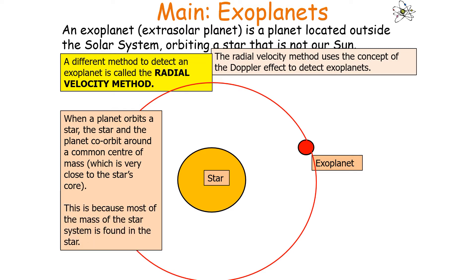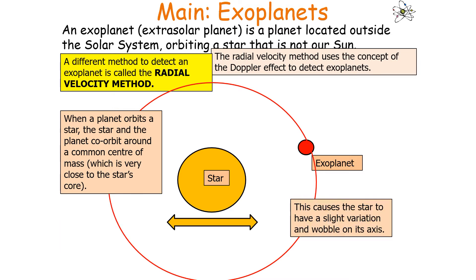This is because most of the mass of the star system is found in the star. For example, in our own solar system, 99.8% of the mass is found in the sun. This means that whilst the exoplanet orbits around the star, the star itself will have a slight variation and wobble on its axis as it rotates about a point inside itself.